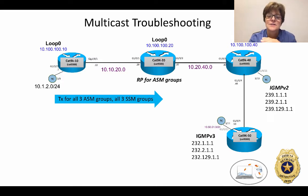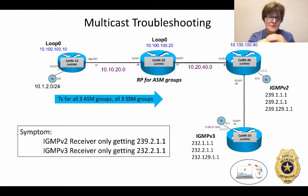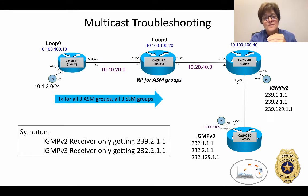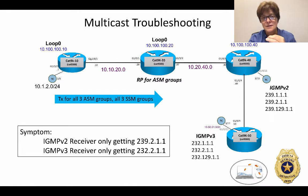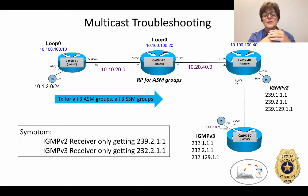CAT 9K 20 is the rendezvous point for all of the ASM groups. As you know, there is no rendezvous point needed for source-specific multicast groups. The symptom is that the receivers are not getting two out of three groups. The IGMP v2 receiver is only getting 239.2.1.1, and the IGMP v3 receiver off of CAT 9K 50 is only getting 232.2.1.1.